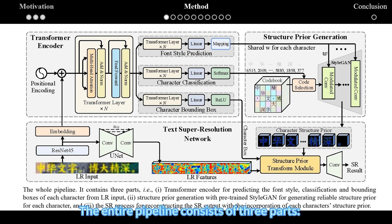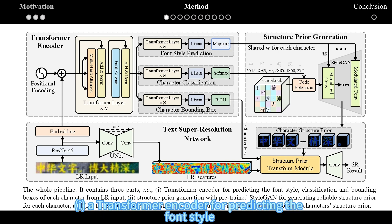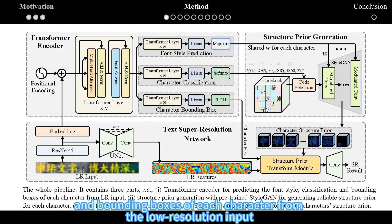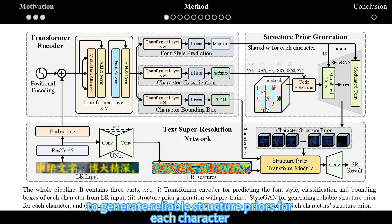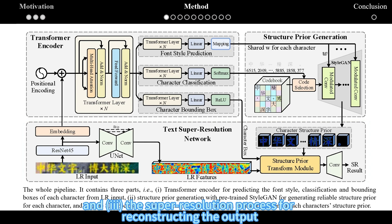The entire pipeline consists of three parts. First, a transformer encoder for predicting the font style, classification, and bounding boxes of each character from the low-resolution input. Second, structure prior generation using a pre-trained StyleGAN to generate reliable structure prior for each character. And finally, the super-resolution process for reconstructing the output with the incorporation of each character's structure prior.